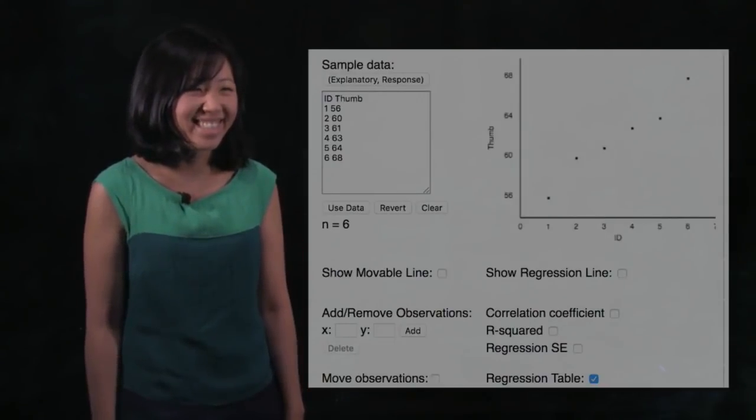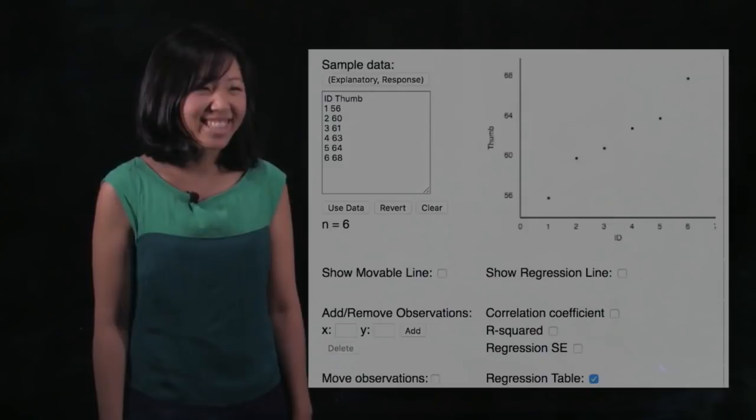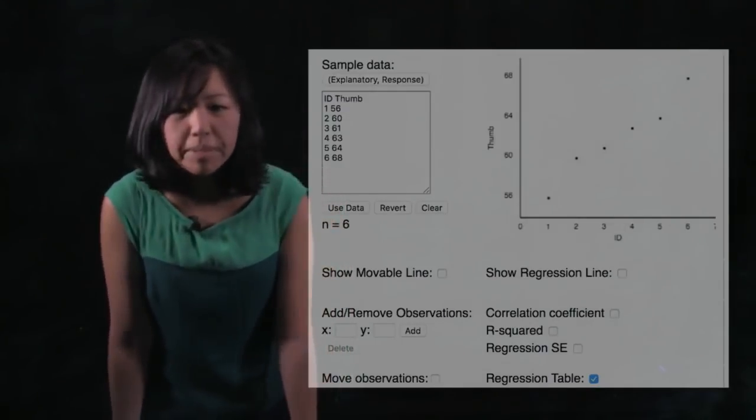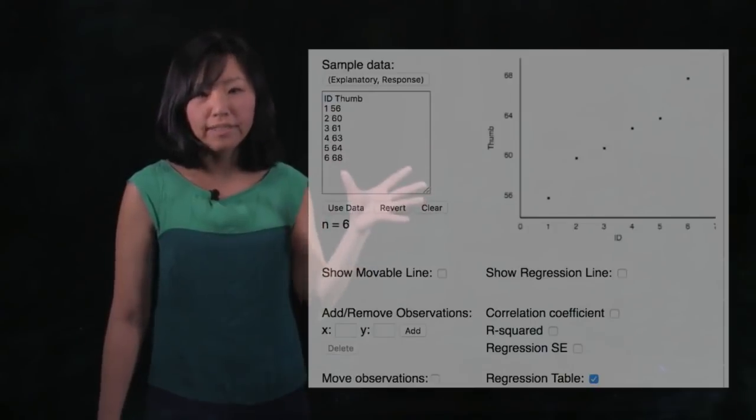Tell us about sum of squares as a way to quantify error around a model. What does that mean?